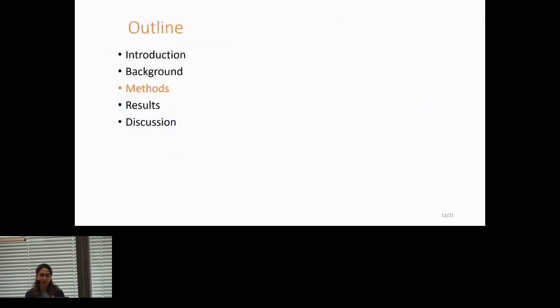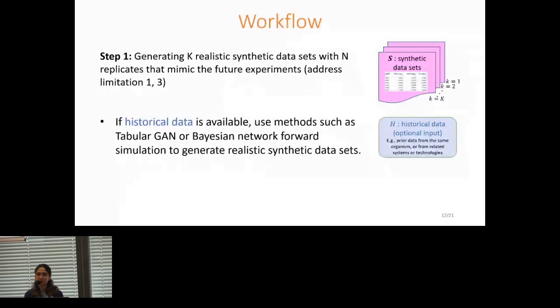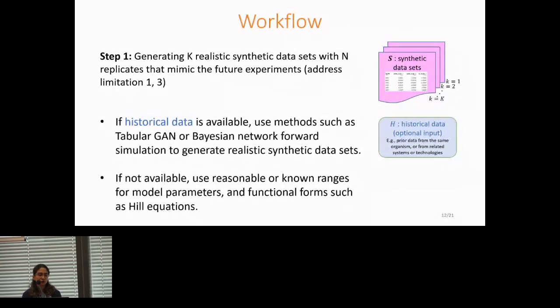Now let's see the workflow of our approach. We have three steps. The first step is generating k realistic synthetic datasets, each have N replicates. The goal of this step is to generate synthetic datasets that mimic future experiments as closely as possible. An optional input to this step is historical data, which refers to prior data from the same organism or from related systems or technologies. So the goal is to, if historical data is present, we want to use methods such as tabular GAN or Bayesian network forward simulation to generate realistic synthetic datasets that are as close as possible to the historical data. And if historical data is not present, which is rarely the case, we are going to use reasonable or known ranges for model parameters and functional forms such as Hill equation.